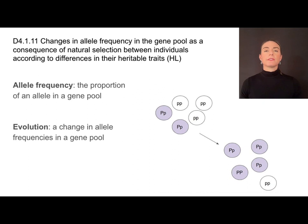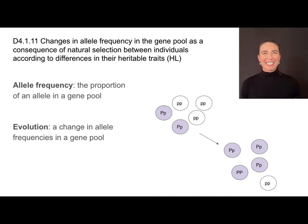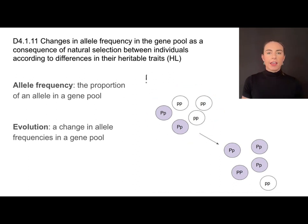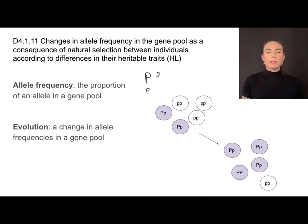With that new understanding, we can actually redefine what evolution is. Evolution is a cumulative change in the heritable characteristics of a population over time. Now let's refine that in the neo-Darwinism light to also include allele frequency. Allele frequency is the proportion of an allele in a gene pool. In generation one, with five individuals and two alleles — dominant big P and recessive little p — there is a total of 10 alleles. Counting the dominant alleles: two out of 10, so the allele frequency for the dominant allele is 0.2.